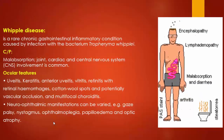Whipple's disease is a rare chronic gastrointestinal inflammatory condition caused by infection with the bacterium Tropheryma whipplei, characterized by malabsorption, joint, cardiac, and central nervous system involvement. Features include encephalopathy, lymphadenopathy, malabsorption, diarrhea, and arthritis. Ocular features include uveitis, scleritis, and anterior uveitis, vitritis with retinal hemorrhage. Neuro-ophthalmic manifestations include gaze palsy, nystagmus, ophthalmoplegia, papilledema, and optic atrophy.